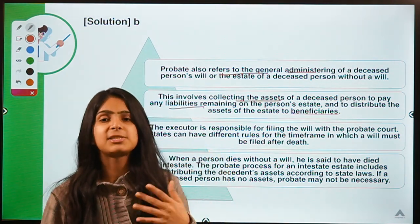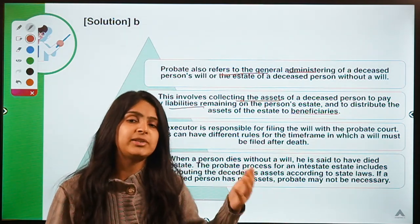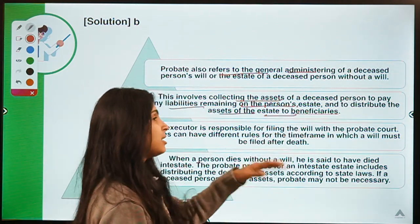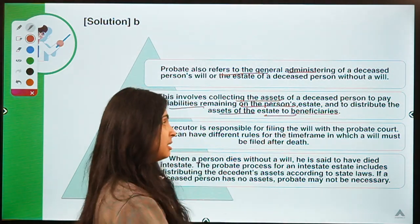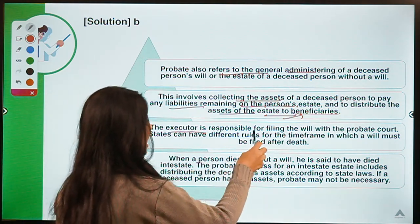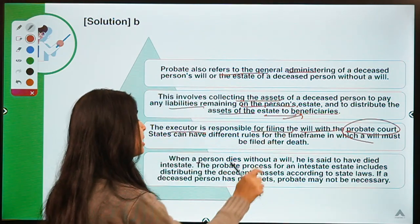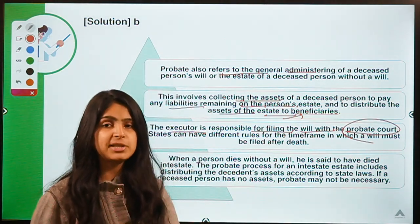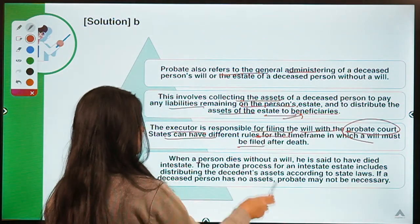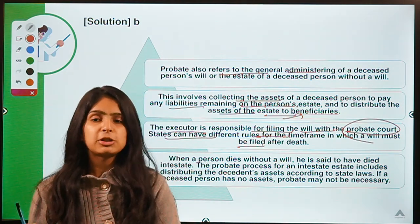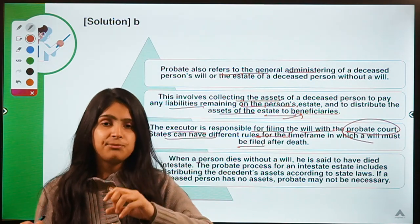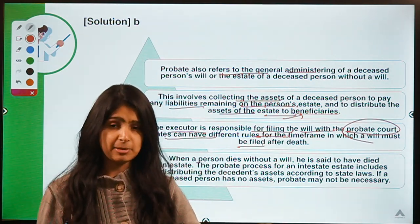Probate involves collecting the assets of the deceased person to pay any liabilities first. If the person had unpaid loans, assets are collected, money is raised, and debts are paid off. After the loans have been cleared, the assets are then distributed to beneficiaries. The executor is responsible for doing all this and can file the will with the probate court. States can have different rules for the time frame in which a will must be filed after death.